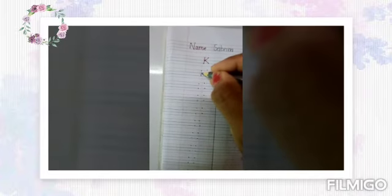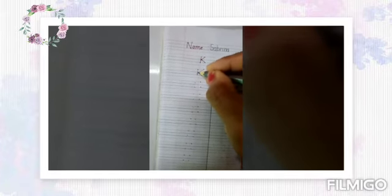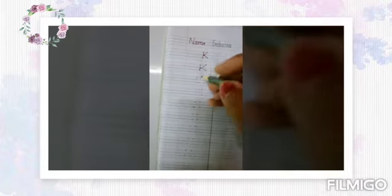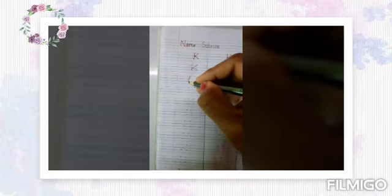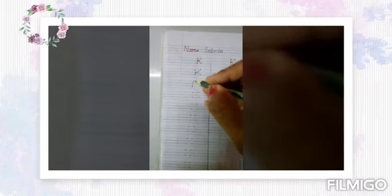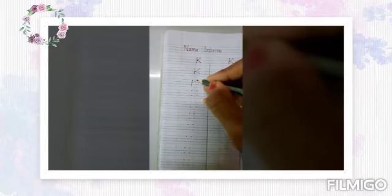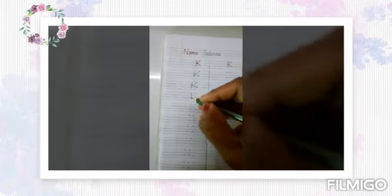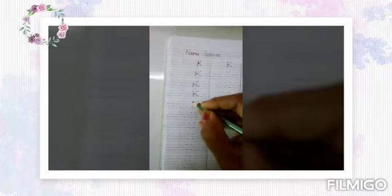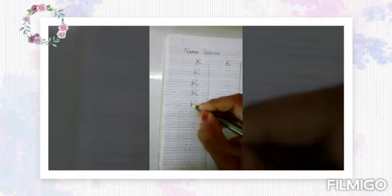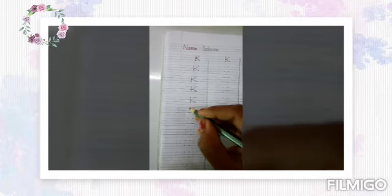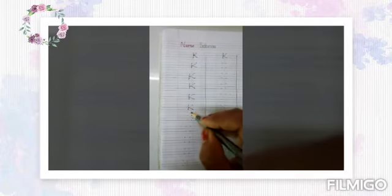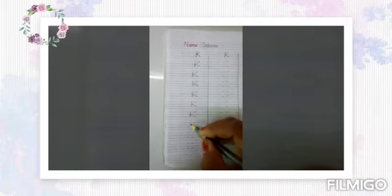Standing line, slanting line and slanting line. Standing line children and slanting line, slanting line. Letter K — you all will write very neatly in your English copy.